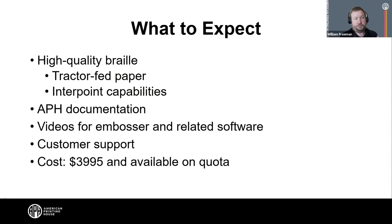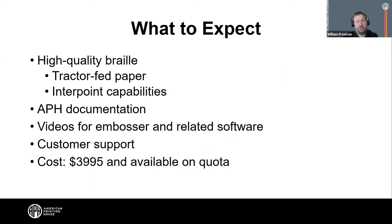Regardless of which APH embosser you get, you can expect: high quality Braille, tractor-fed paper, interpoint capabilities, APH documentation, and videos for each embosser. William recommends watching the videos before buying — they cover the most complicated parts. Both embossers cost the same: $3,995, and both are available on quota. APH customer support handles both: PixBlaster through ViewPlus, PageBlaster through Humanware — but if you bought from APH, just call APH for any issues.